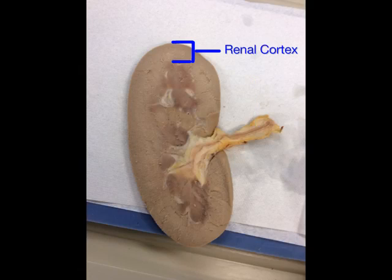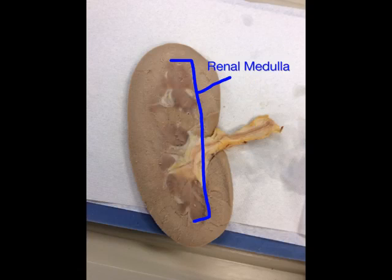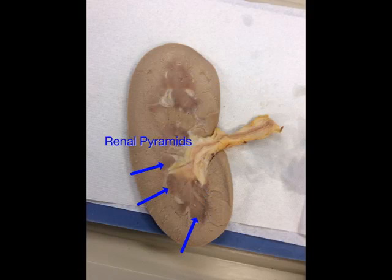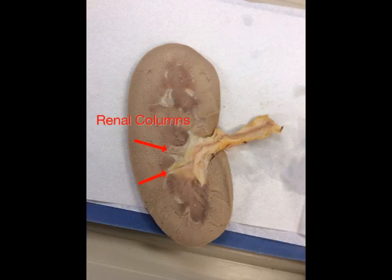The outer layer of the kidney is called the renal cortex. The inner layer of the kidney is called the renal medulla. The dark structures within the renal medulla are called renal pyramids, and in between renal pyramids are renal columns.